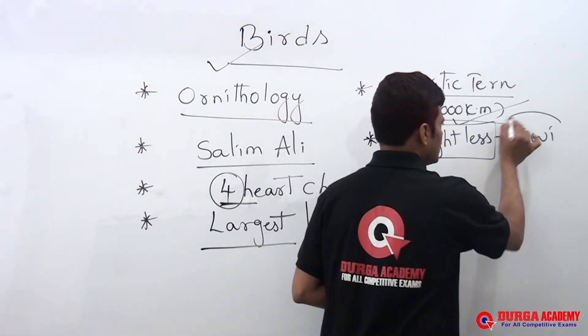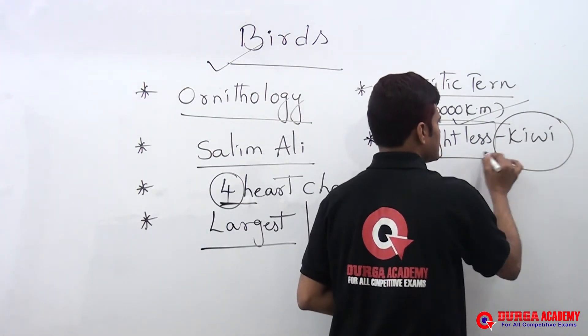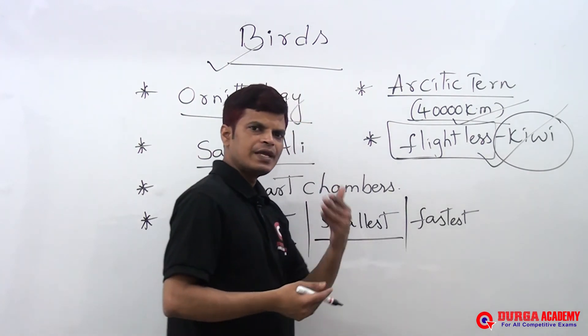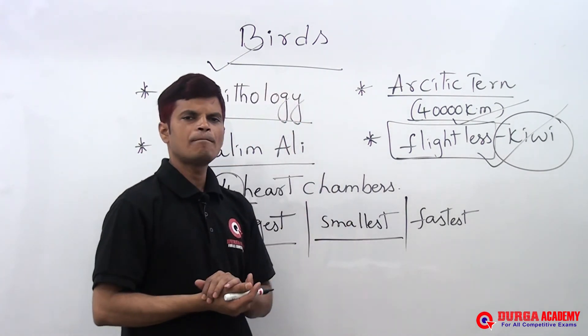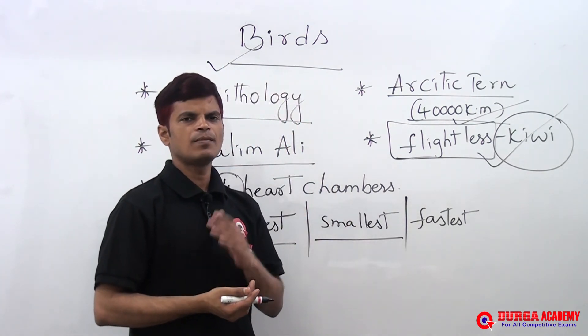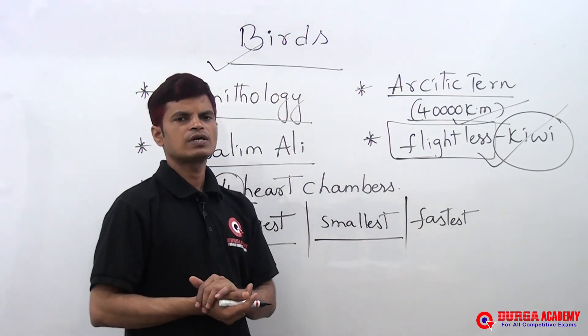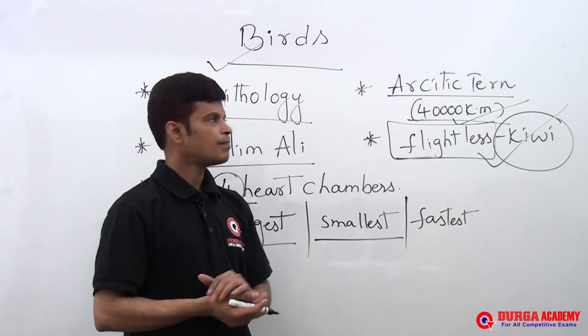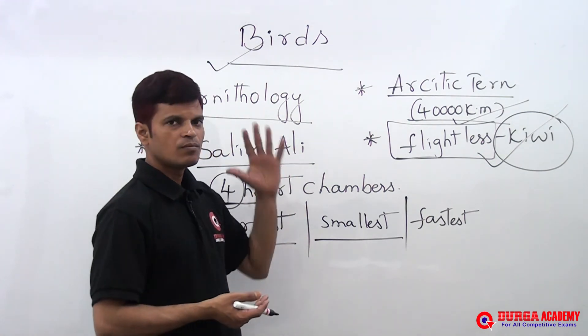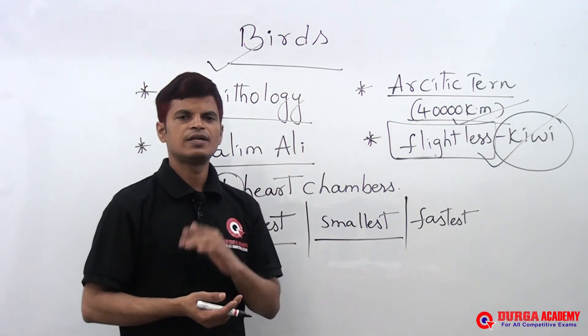The kiwi is the national bird of New Zealand. India's national bird is the peacock. The scientific name of the peacock is Pavo cristatus. These are the important points about birds. Thank you, friends.